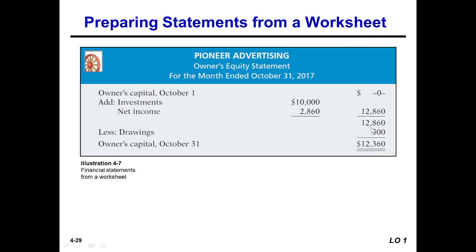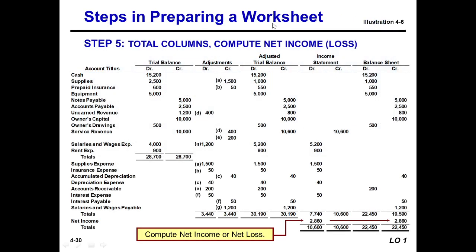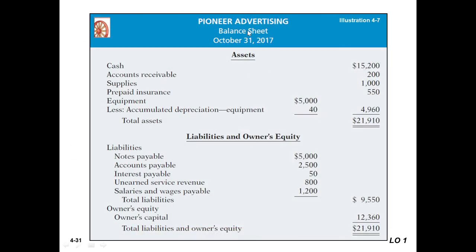With drawings of five hundred subtracted, the owner's capital at October 31st becomes twelve thousand three hundred sixty. This is our ending capital, which we need to prepare our balance sheet. Now we will prepare the balance sheet.